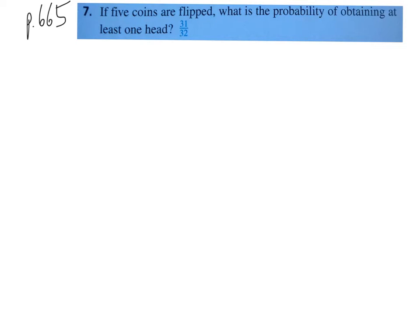Same page, number 7: if five coins are flipped, what is the probability of obtaining at least one head? Here's a hint: anytime you see "at least" in a probability problem, it often means you need to consult the complement. Obtaining at least one head is a very complicated event — you could get one head in various arrangements, two heads, three, four, or five heads. But the complement of it is not complicated. What's the complement of at least one head? That would be no heads, which is the same thing as all tails — a very straightforward event with only one way to do it.